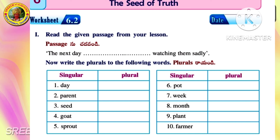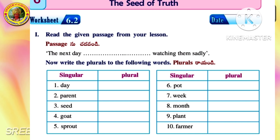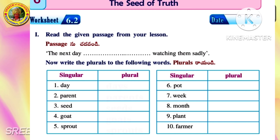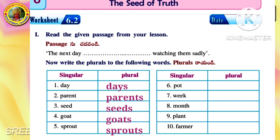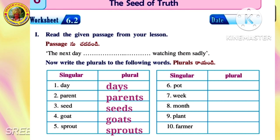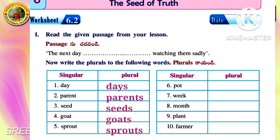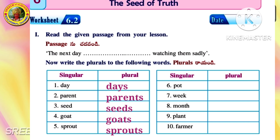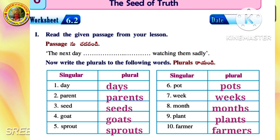Worksheet 6.2: Read the given passage from your lesson — The next day... to watching them sadly. Now write the plurals of the following words. First: Day — Days. Second: Parent — Parents. Third: Seed — Seeds. Fourth: Goat — Goats. Fifth: Sprout — Sprouts.